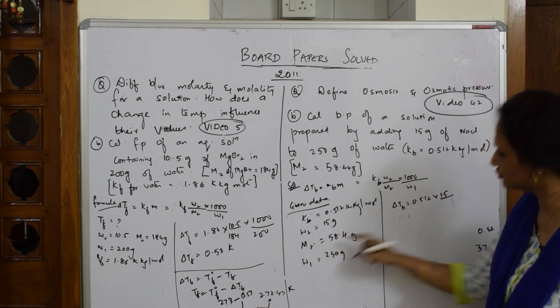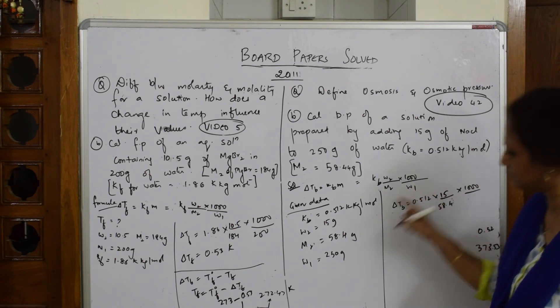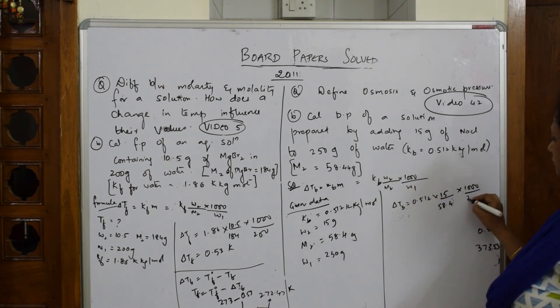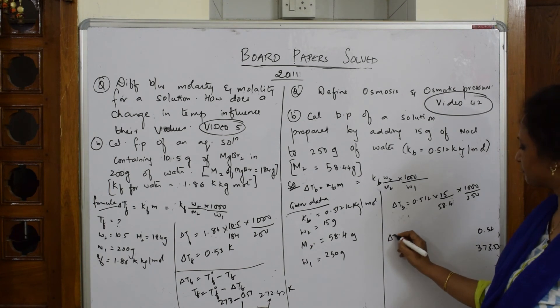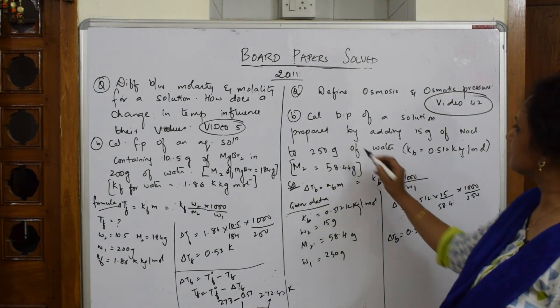Let's substitute. Delta TB equals KB 0.512, w2 is 15 grams, m2 is 58.4 grams into 1000 divided by w1, which is 250. When I solve this, I get 0.52.